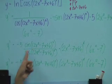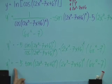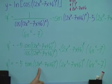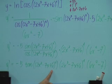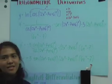This whole thing is just tangent. Sine over cosine is just tangent, so you can simplify it to negative 5 tangent(2x³ - 7x + 6)⁵ times (2x³ - 7x + 6)⁴ times (6x² - 7).